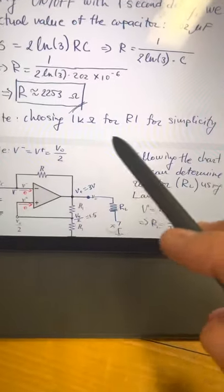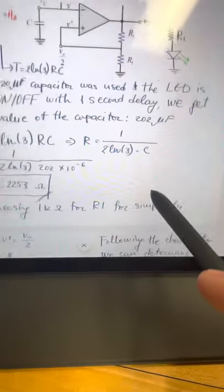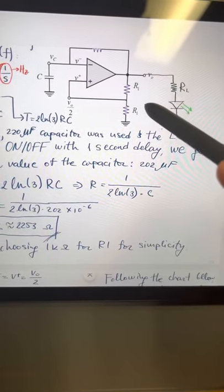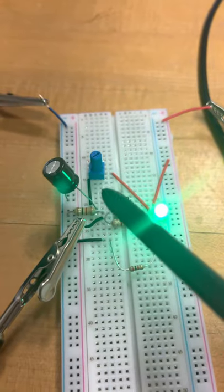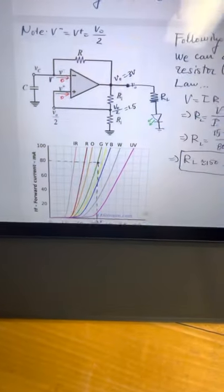Next, for simplicity, a 1 kilo ohm resistor for both R1s was used, which are these two resistors.